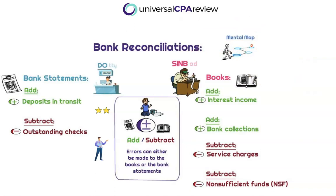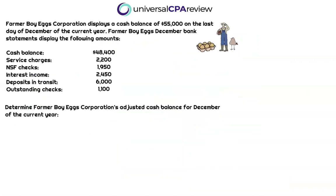To recap: deposits in transit are added to the bank statements, and outstanding checks are subtracted from the bank statements. On the bookkeeping side, remember Sinbad — interest income and bank collections are additions to the books, while service charges and NSF checks are reductions. You need to know what's being added and what's being subtracted. If you're in a crunch for time, always start with the shorter list — the D and the O for Dottie.